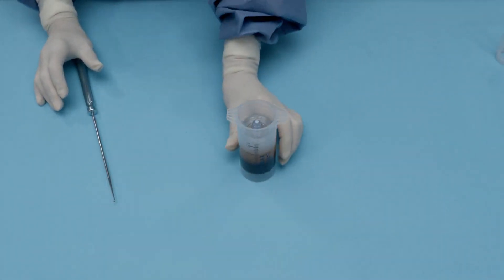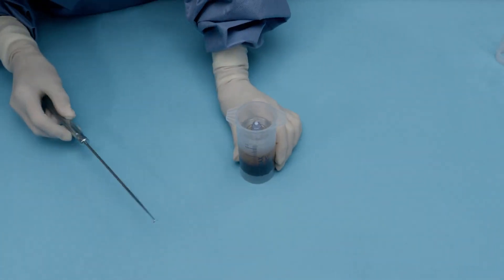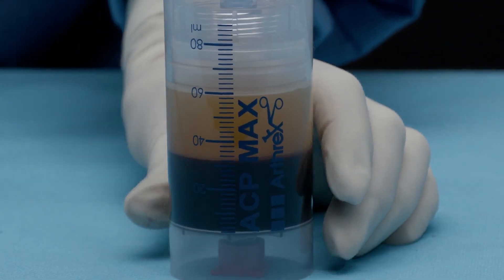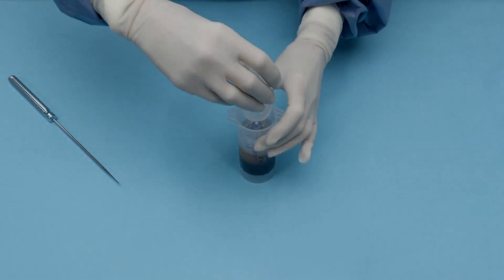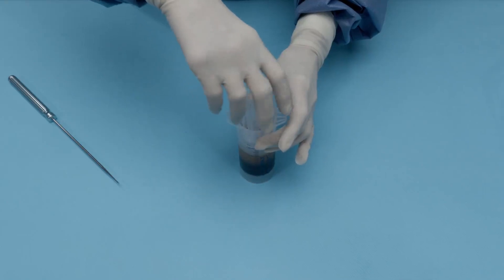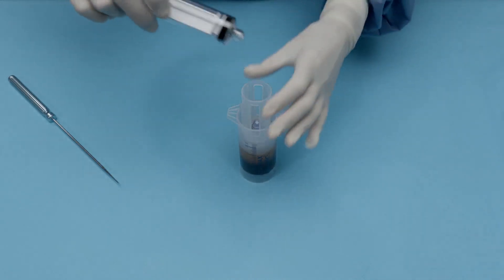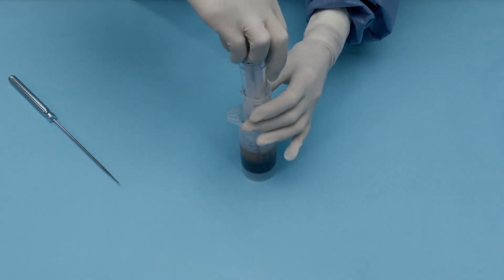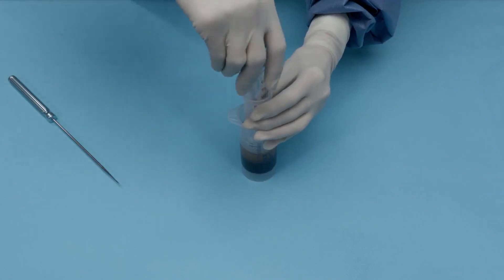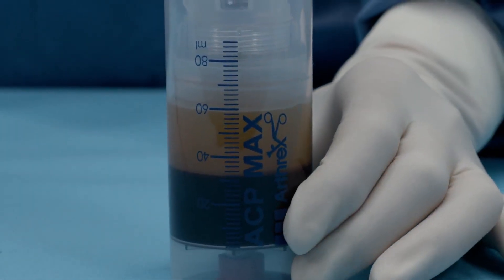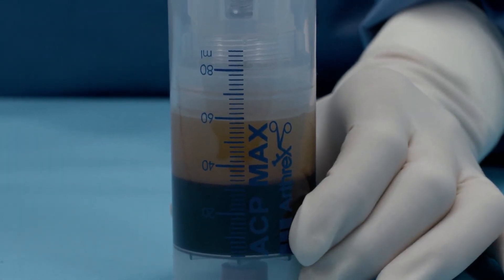After your first spin, you'll see in your ACP Max device a clear delineation between your platelet poor plasma, Buffy coat, and your RBC layer. We're going to replace the cage guide onto the ACP Max device. Then we're going to take one of the 30 cc syringes supplied in your kit and firmly seat it upon the needleless valve. And then we're ready to pull off our platelet poor plasma.